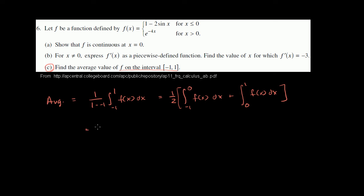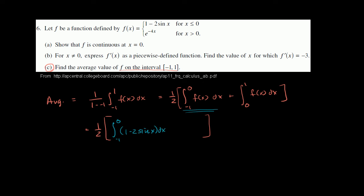So we get this is equal to 1 half times, in brackets, the integral from negative 1 to 0. What is f(x) between negative 1 and 0? It's 1 minus 2 sine of x. Then plus the integral from 0 to 1. What is our function between 0 and 1? It's e to the negative 4x dx.